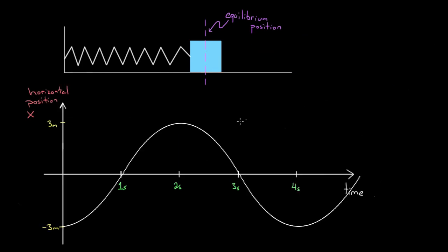Let's say you got this problem on a test and it said: make an equation that describes this simple harmonic oscillator. First thing you do: do I want to use sine or cosine? It doesn't start at a maximum, and it doesn't even start at zero—it starts down here at a minimum. So we're still going to use cosine. So x as a function of time is going to be... what's the amplitude?